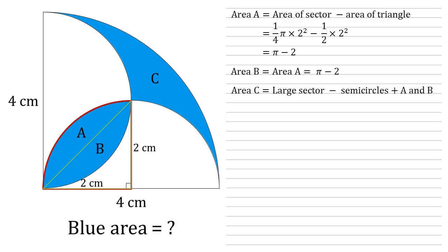The large sector is a quarter of a circle. The radius is four. So again, we're going to use our πr² times a quarter. So we've got a quarter times π times four squared. The semicircles, it's half a circle. So a half πr². The radius is two. And we've got two of them. So two times a half π times two squared. And we know that A and B are both π minus two. So adding them back in, we've got two lots of π minus two.